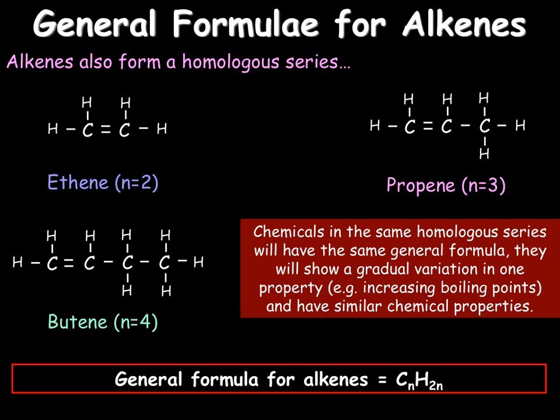In order to define what a homologous series is, we can say that chemicals in a homologous series will have the same general formula, they show a gradual variation in one property — for example increasing boiling points as they get larger — and they have similar chemical properties, including the reactions they take part in and how reactive they are. Unlike C1, you do need to know about some more homologous series. Alkanes and alkenes are two of the most common, however we need to know about three more.